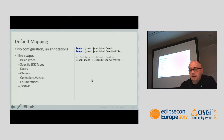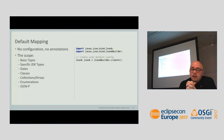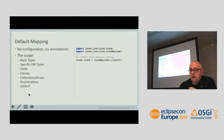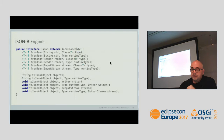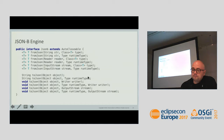Now let's talk about YASSON features. Starting with default mapping — this is a set of defaults specified in the spec that every JSONB implementation must have. No configuration, no annotations needed. You create a JSONB engine in just one line of code. The scope of defaults covers basic types, specific types, date and time, arrays, collections, and JSONP types. The main interface has overloaded fromJson and toJson methods — fromJson is deserialization, toJson is serialization with different sources.